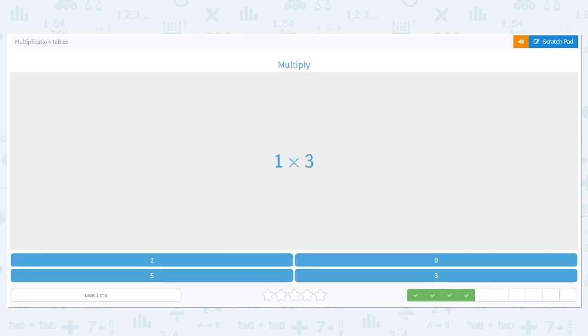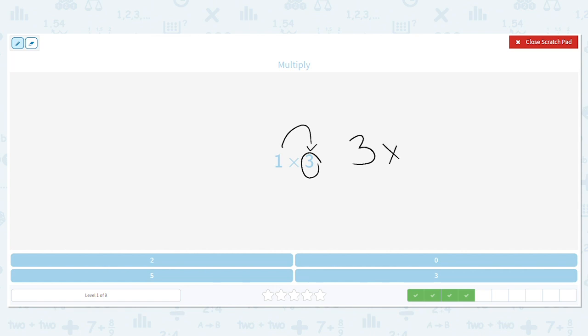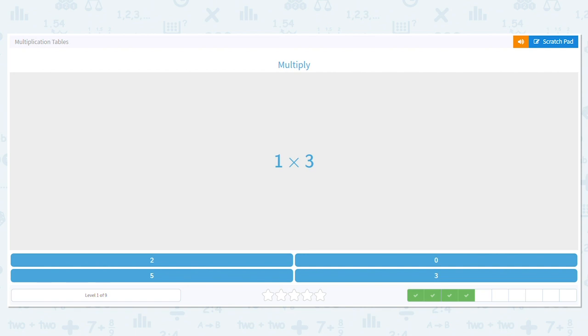How about 1 times 3? Any number times 1 equals the other number. Now, what if the problem were 3 times 1? Does that matter? Should I still get 3 as my product? I should. Just like in addition, the order doesn't matter. It's still going to equal the same number. So 1 times 3 or 3 times 1 equals 3.